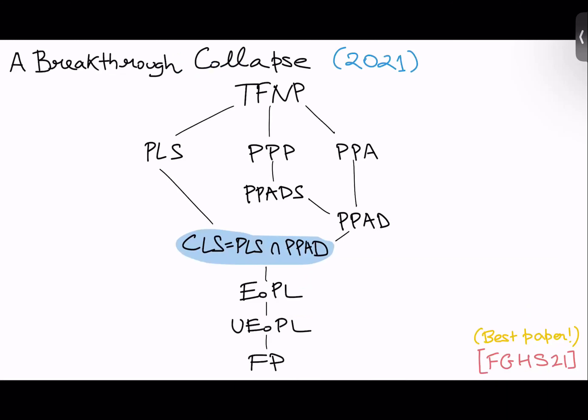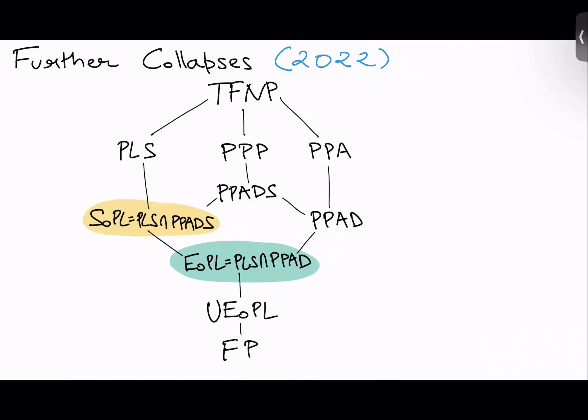So precisely to capture problems between FP and PPAD, in the past decade, people defined complexity classes in between these two. I'll tell you what CLS stands for, stands for continuous local search, think about gradient descent being the canonical problem for this class. And a breakthrough result, which was published a couple of years ago now, is that this naturally defined class CLS is actually equal to this intersection of two classes PLS intersection PPAD.